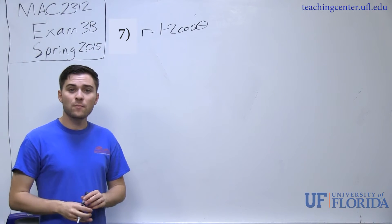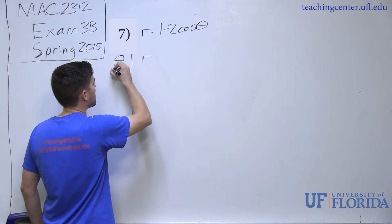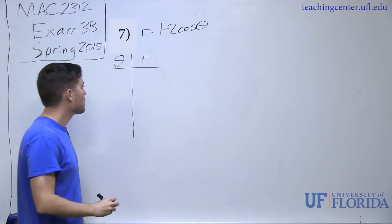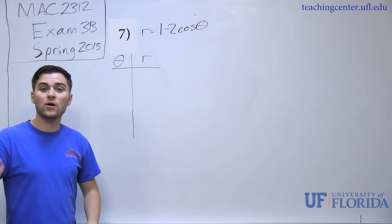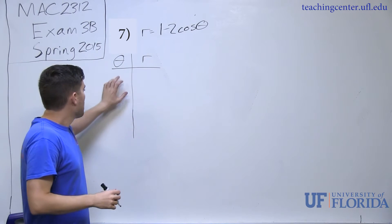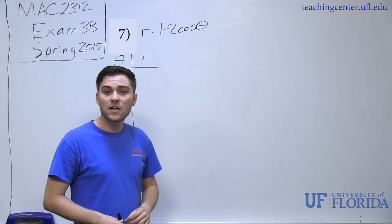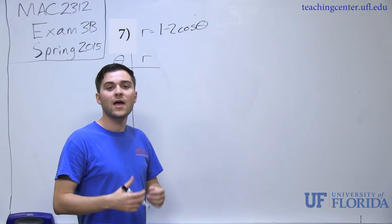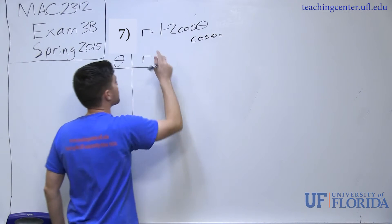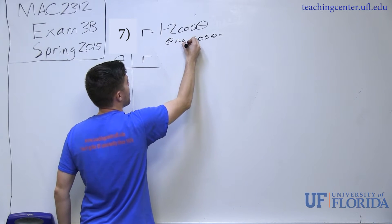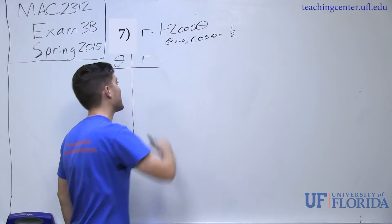To plot in polar, I usually make a chart with theta and r columns. The first thing I want to do is figure out where the zeros are. I look at the equation, plug in r equals zero, and solve for the corresponding theta values. Setting r equal to zero gives us cosine of theta equals one half, just by doing algebra.